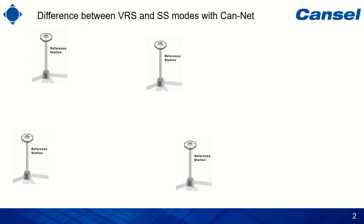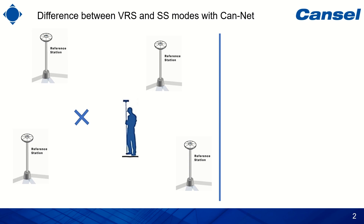The default mode of using CANNET is called VRS, or the Virtual Reference Station mode. That mode can be used if your rover is surrounded by CANNET base stations within a hundred kilometers. In that mode, a virtual or imaginary reference station will be created using the surrounding CANNET base stations, and that virtual reference station will be used as your base station in your RTK working mode.